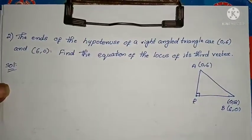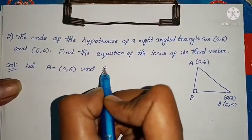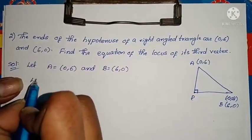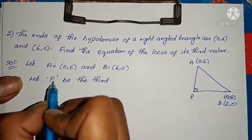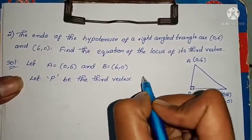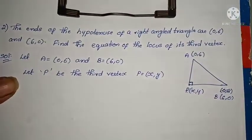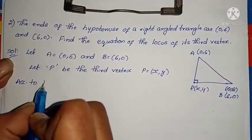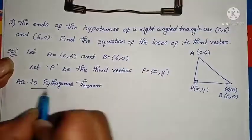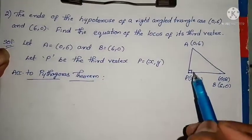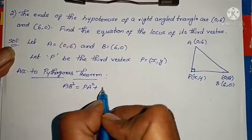Solution — this is the same type of problem. According to Pythagoras theorem, AB² = PA² + PB², since AB is the hypotenuse and the right angle is at P. We apply the distance formula: (x2 - x1)² + (y2 - y1)².